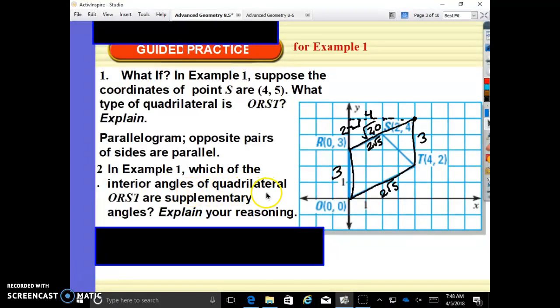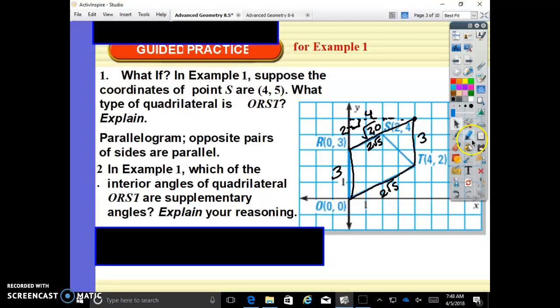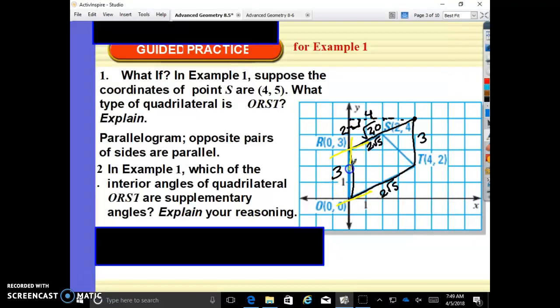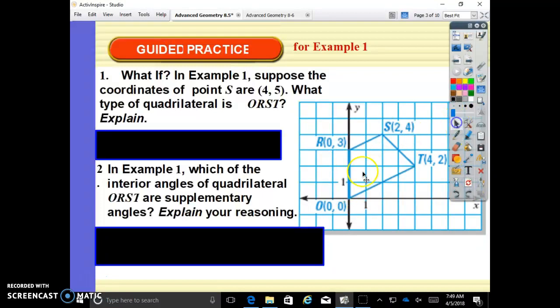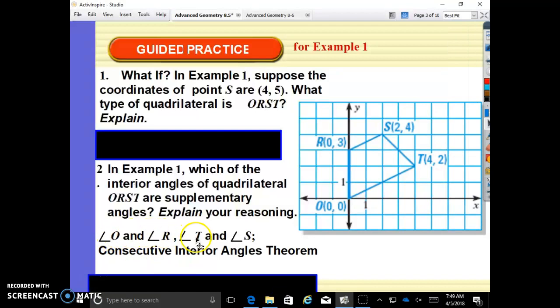Okay, so which of the interior angles are supplementary? Supplementary angles add to 180, complementary adds to 90. So which of these angles would add to 180? If we remember back to parallel lines, we have a parallelogram with parallel lines cut by a transversal. If parallel lines are cut by a transversal, then your consecutive interior angles, your same side insides are supplementary. So angle R is supplementary to angle O. Angle O is supplementary to angle T. Angle S is supplementary to angle T, and R and S are also supplementary.